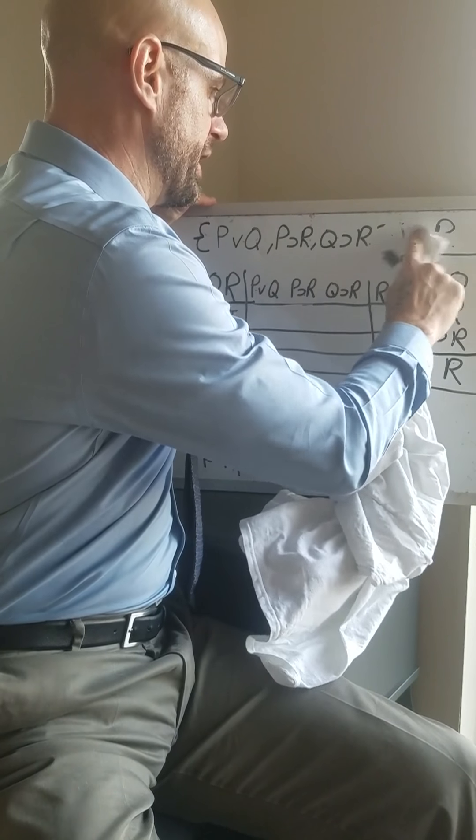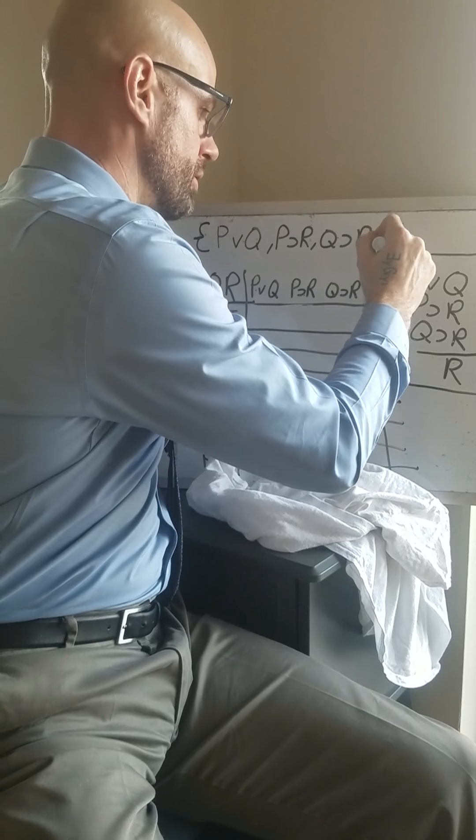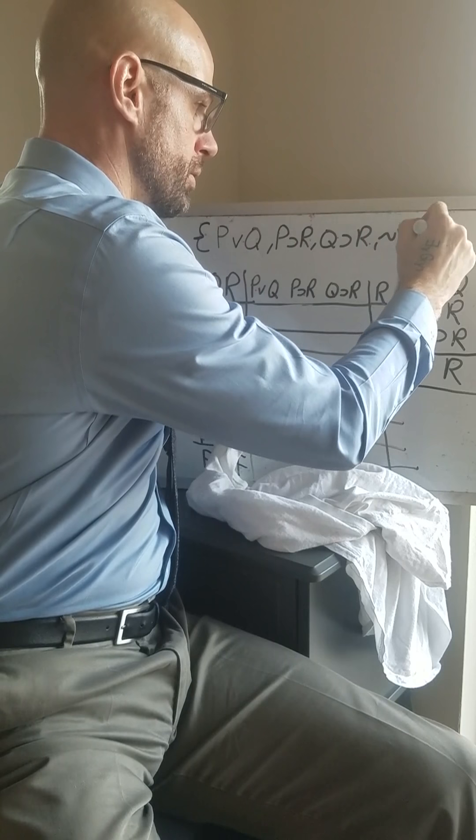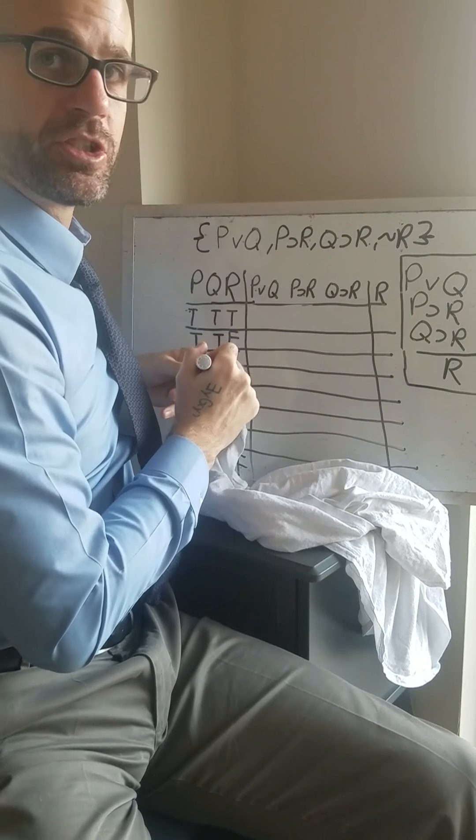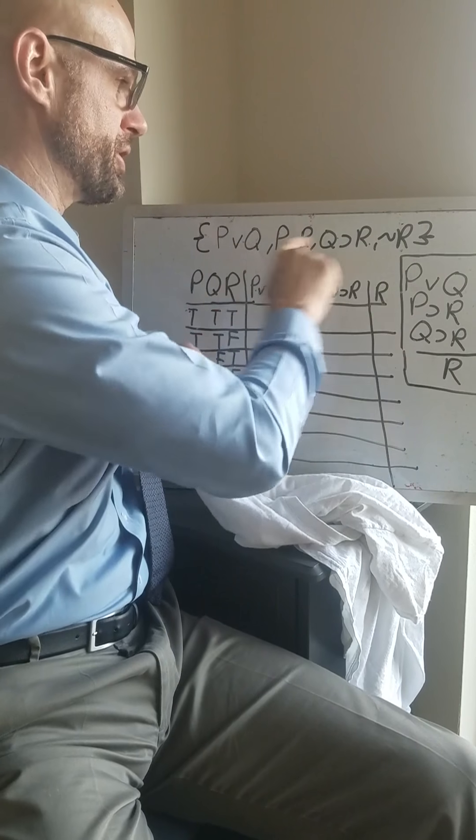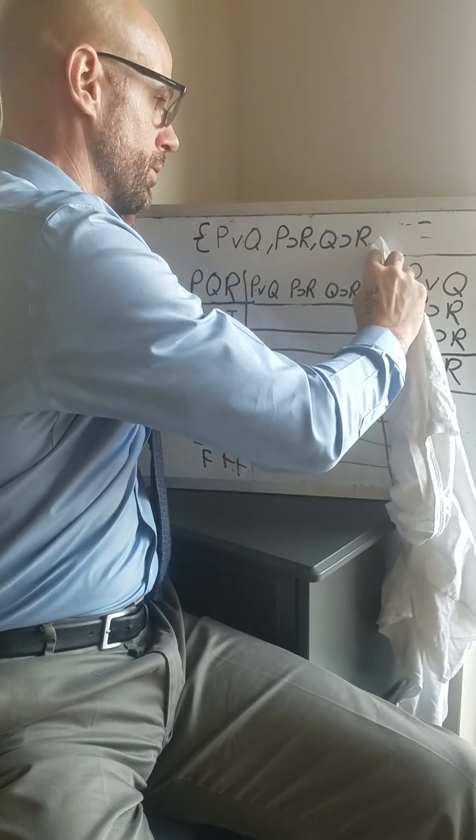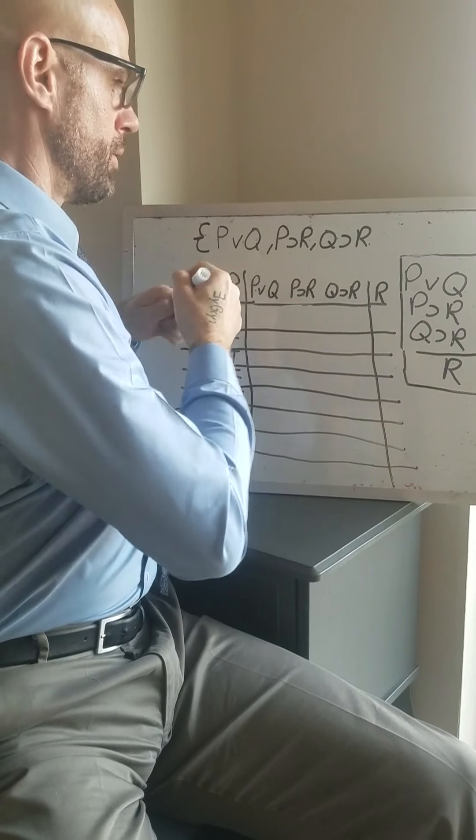And again, that's equivalent to saying that we could take, if we take this R and we put a negation sign on it and add it to this set, then the resulting set is inconsistent. There's no truth value assignment that's going to make all of that true.